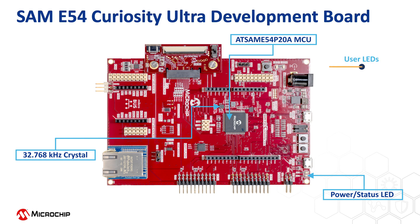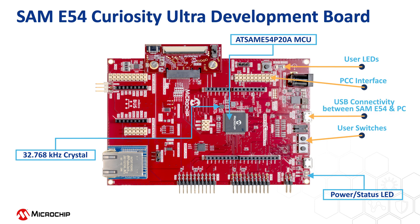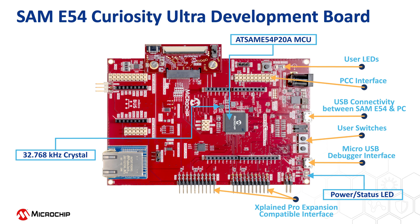The SAM E54 contains two user LEDs which will be useful to show the application status, and two user switches helpful for reading user inputs. There is a parallel capture controller or PCC interface for camera connections, and a micro USB connector to connect the SAM E54 microcontroller with a PC. The board contains an onboard debugger for programming and debugging the AT-SAM E54 P20A MCU, which also acts as a virtual COM port. The extension headers are useful for connecting extension boards or to access the I/O pins of the SAM E54 MCU. The board also has an 8 megabyte onboard QSPI memory and an I2C based serial EEPROM to store application data.